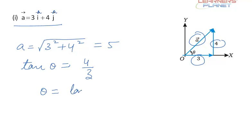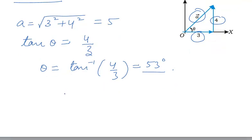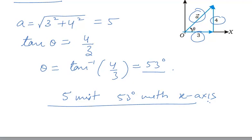So theta is equal to tan inverse of 4 by 3 which is equal to 53 degrees roughly. So you will say that vector A has a magnitude of 5 units and it is making an angle of 53 degrees with x axis. This is how you will specify the magnitude and the direction.